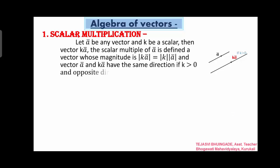And if k is negative, means k less than 0, then the vector kā is in opposite direction. If the result vector is negative, then the result vector is in opposite direction. This is the scalar multiplication definition of ā and kā. If the value is positive, the direction of kā is same as ā. If the value is negative, then the direction of kā is opposite to ā.